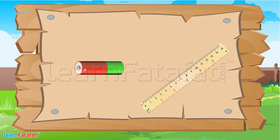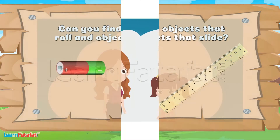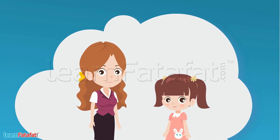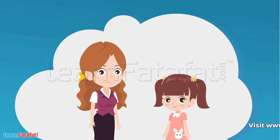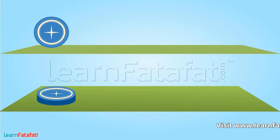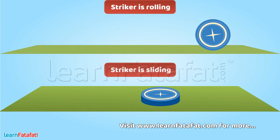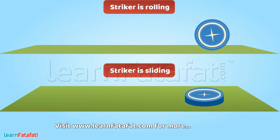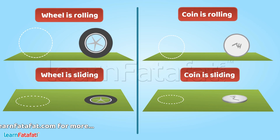Look at these objects. Can you find objects that roll and objects that slide? Yes. Do you know, Richie? Some things can roll as well as slide. See the striker — it can roll and slide. Similarly, a wheel and coin can also roll and slide.